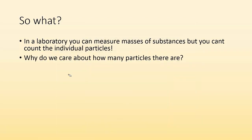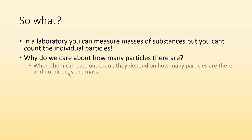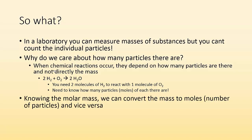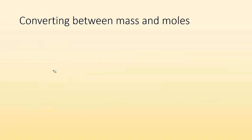So why do we care about how many particles there are? Couldn't we just use everything in grams? No. When chemical reactions occur, they depend on how many particles are there, not directly the masses. That balanced chemical equation tells us we need two individual H2 molecules — or two moles of H2 — for every one mole of O2 to give 2H2O. You need to know moles. Knowing the molar mass, we can convert mass to moles and even number of particles, and vice versa.